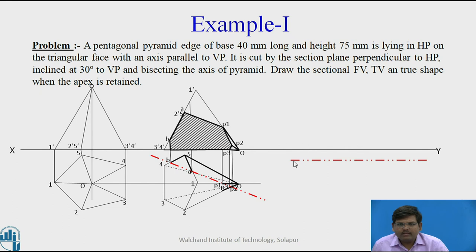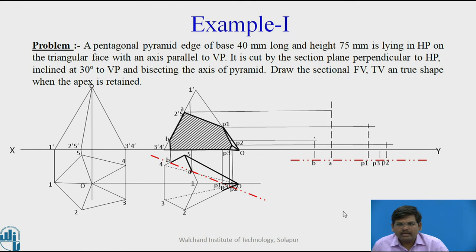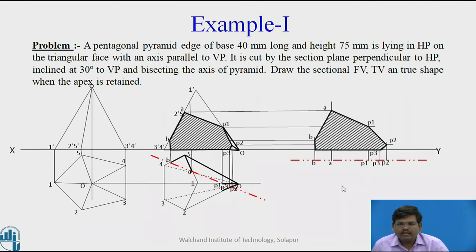Coming to the true shape — this is the cutting plane parallel to XY. Plot the points B, A, P3, P2 and P4 on this line. Take the distances with the help of a compass and plot them over this line. Project these distances in the vertical upward direction and take the horizontal projections from the previous front view — point B from the front view and point B from the cutting plane, similarly point A, P1, P3, and P2. Point 3 being on the XY line. By joining these points we get the required true shape of the section. This is the complete projection as far as the given question is concerned.